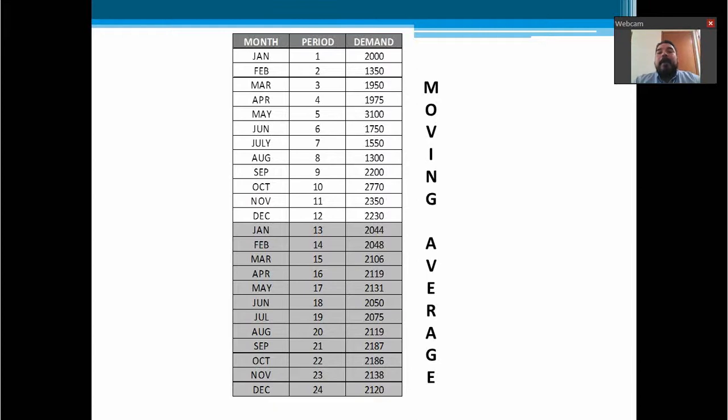If we are talking about moving average, we are calculating an average of all the information that we have. In the upper part of the chart, we can observe that this is the information that we have from January to December. Let's say that it's January to December of 2016. And we have the information of the demand of every month. This is the real information.